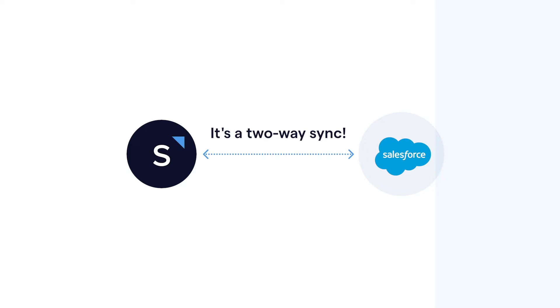SleekFlow will use the customer's phone numbers or email addresses as primary properties and automatically combine duplicated contacts. Yes, it's a two-way sync — a new customer contact added on one platform will automatically reflect on another, helping you build a continuously expanding customer database.